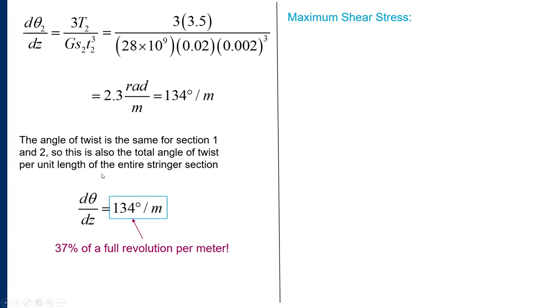That's half of the problem—we've calculated our angle of twist per unit length. Now we want to look at the maximum shear stress. The maximum shear stress for a rectangular plate is given by equation 3.5: 𝜏_max equals 3 times the torque divided by s times the thickness squared. We need to check both sections because we had a difference in the amount of torque and also a difference in the thickness.